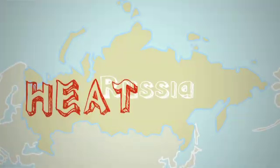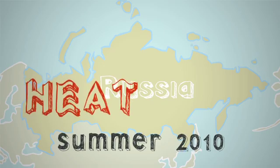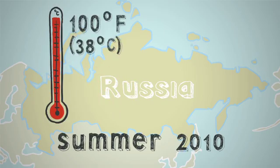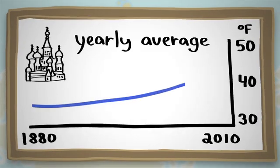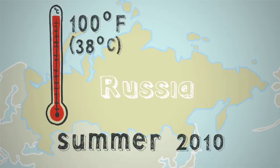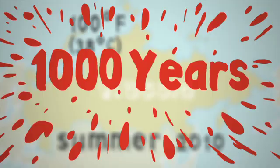In western Russia, a heat wave in the summer of 2010 brought temperatures to 100 degrees Fahrenheit for weeks, the highest temperatures in 130 years of record keeping. Other historic documents show that it was the worst heat wave in a thousand years.